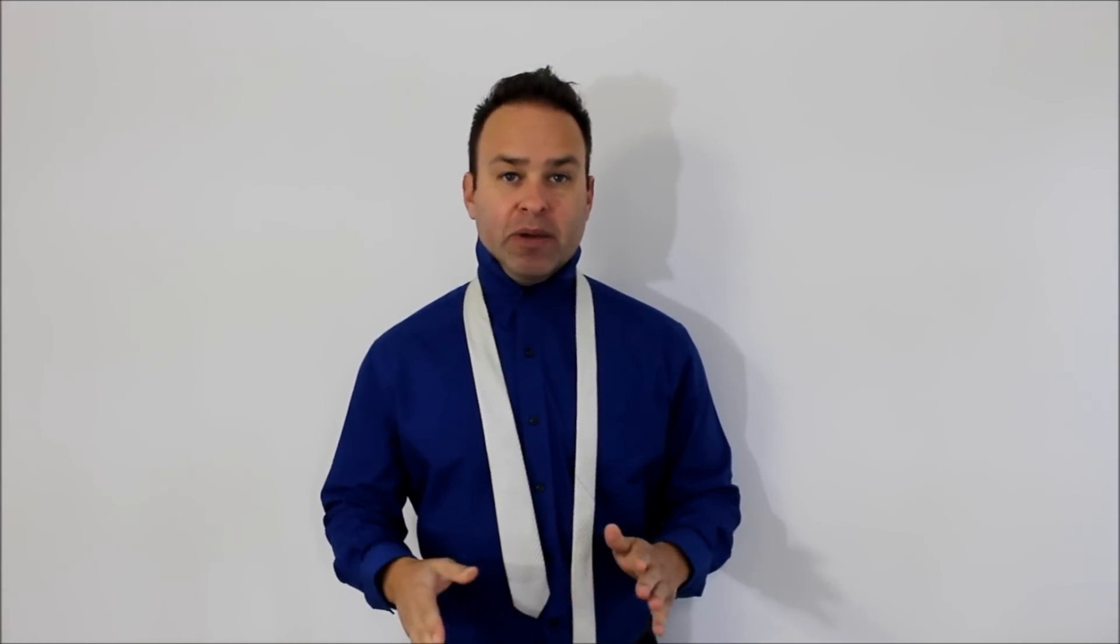Alright, so first step is drape it over your neck. You're going to be tying it with the little end, so the big end is going to be just around where your belly button is. Alright, let's have a closer look.